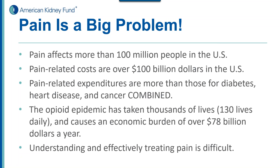The opioid epidemic, as many of you have heard in the news, affects and takes thousands of lives — 130 lives daily. People pass away from opioid-related overdose and illness, causing an economic burden of over $78 billion a year. Obviously, patients have pain and get treated with certain medications, but oftentimes those medications can have devastating effects in terms of lives taken. Understanding and effectively treating pain is very important, but it can be very difficult.